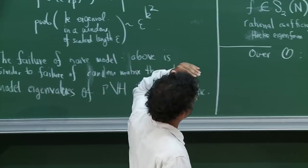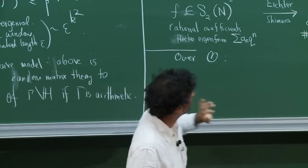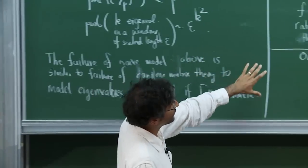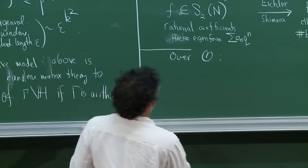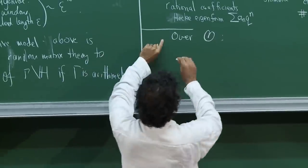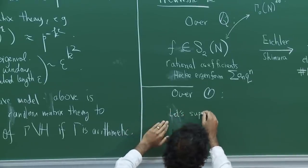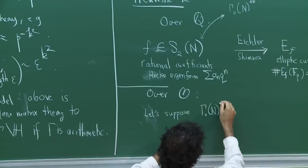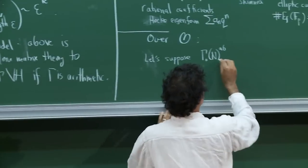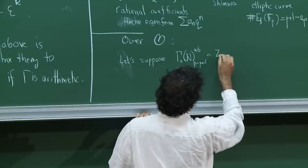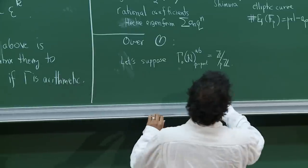Let me make the simplest statement I can. Suppose we are in a setting where the p-part of the abelianization of Gamma_0(N), over this imaginary quadratic field, just consists of a single factor of Z mod pZ. Pick a non-zero element alpha here. Then you can make a Galois representation rho going from the Galois group of k-bar over k to GL_2(Z mod p), with the same p here and here.